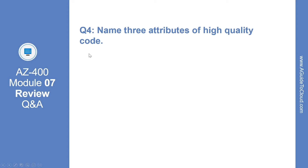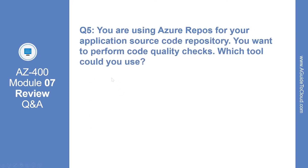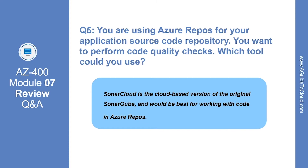Question 4: name three attributes of high quality code. High quality code should have well-defined interfaces, it should be clear and easy to read, and self-documenting is desirable. Question 5: you are using Azure Repos and want to perform code quality checks — which tool could you use? SonarCloud is the cloud-based version of the original SonarQube and would be best for working with code in Azure Repos.